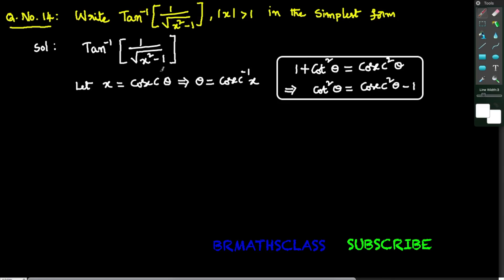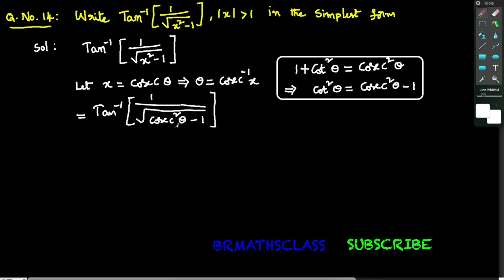In the given expression, in place of x we substitute cosecant theta. As we take x as cosecant theta, in place of x squared we write cosecant squared theta. That equals tan inverse of 1 divided by the square root of cosecant squared theta minus 1.